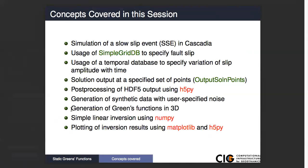We're also going to talk about a temporal database, which is how we specify our time variation of the slip amplitude. We're also going to talk about outputting the solution at a set of points rather than over the entire grid or along the ground surface. PyLith will do the interpolation to a set of points that you specify — in our problem today, this will represent GPS stations.